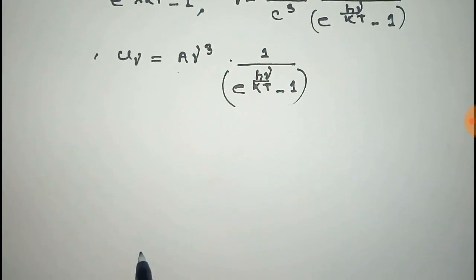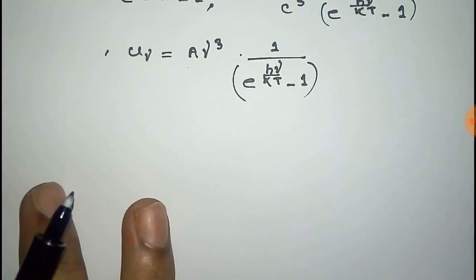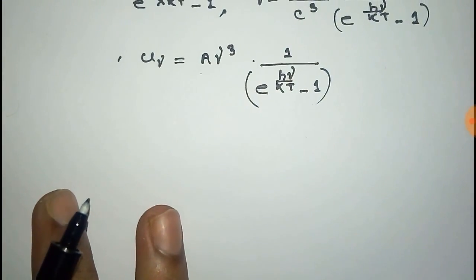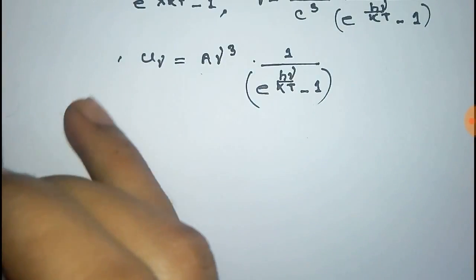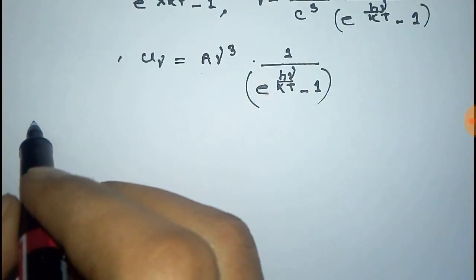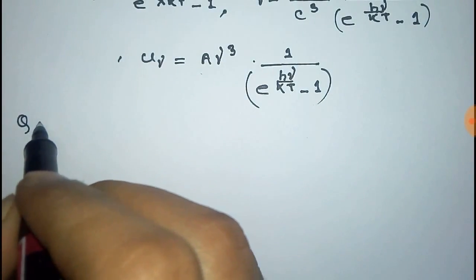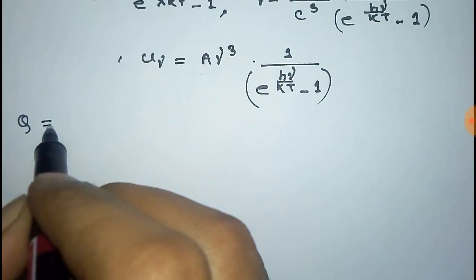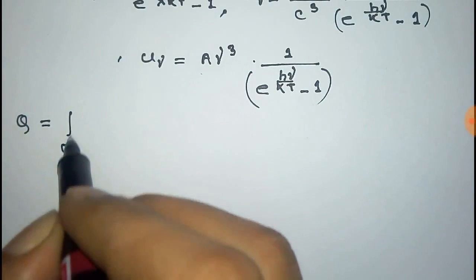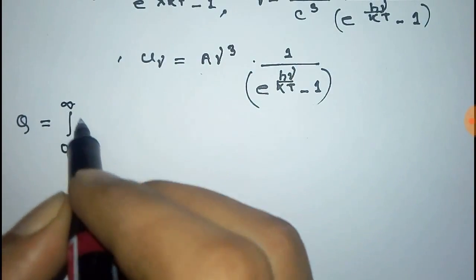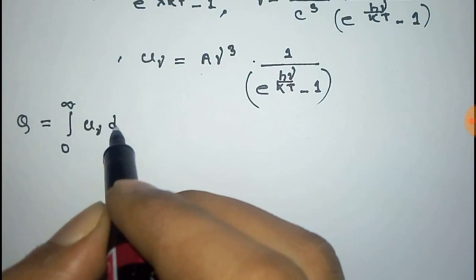Now, here U_ν is the energy density, so the total energy radiated from the body per unit time per unit area is equal to Q, that is, the integration from 0 to infinity of U_ν dν.